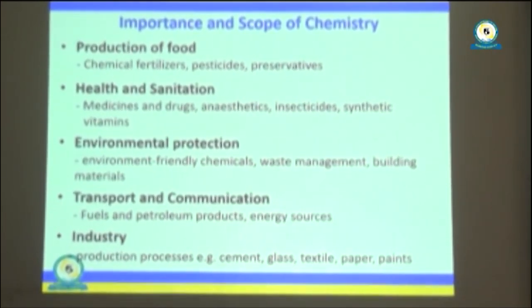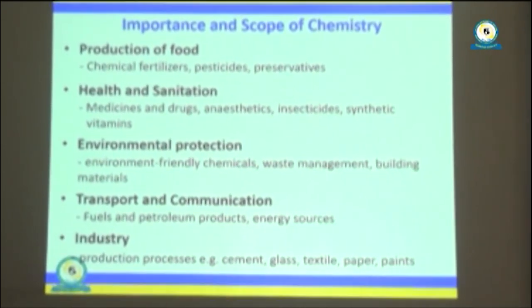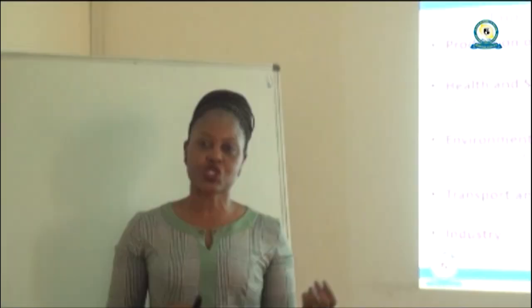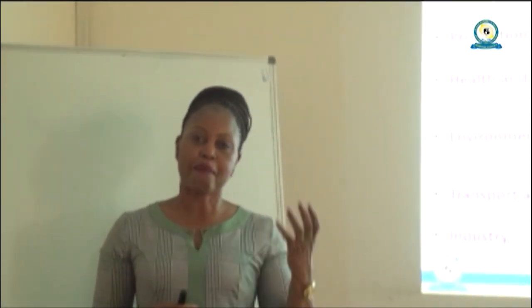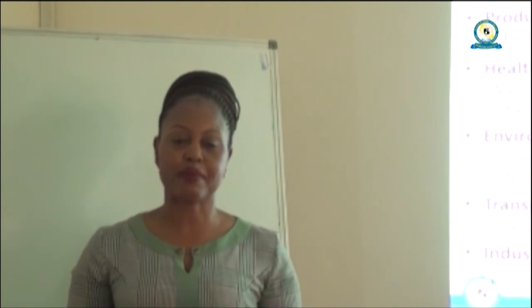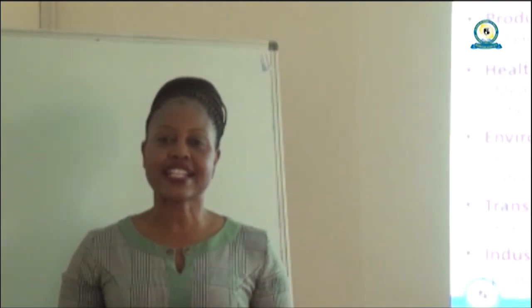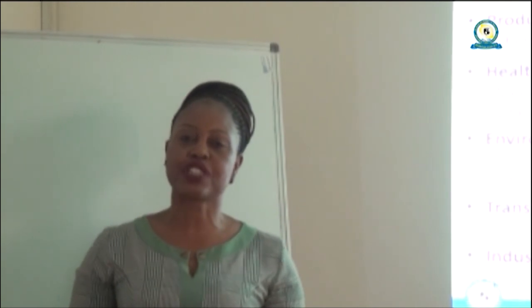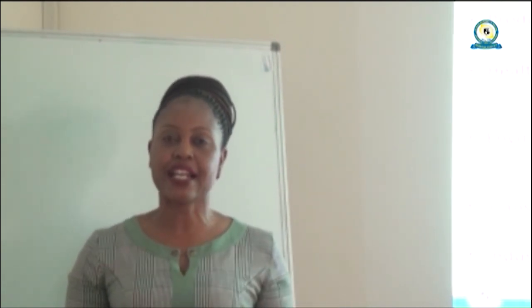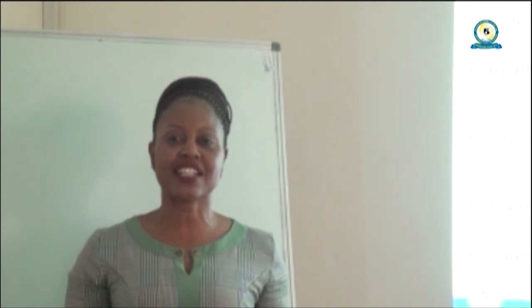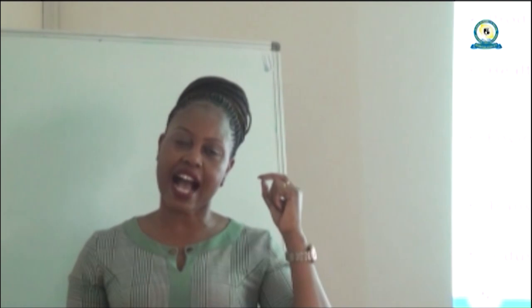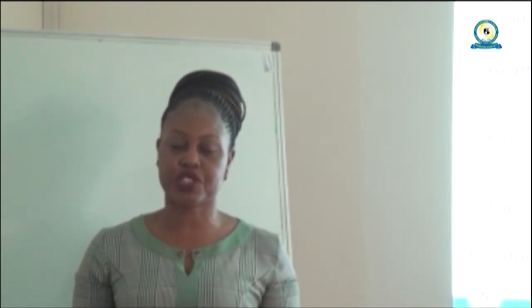Also, in transportation and communication, for example, the fuels we use, such as coal and petroleum products, energy sources — they are all matter and they are described by chemistry. Also, in industry, we have some production processes. For example, production of cement, production of glass, production of textile, production of paper, production of paints and all different kinds of products. They are all processes that are governed by chemical laws and procedures.